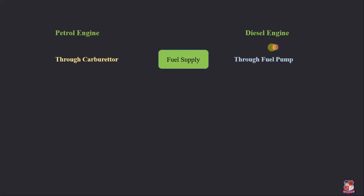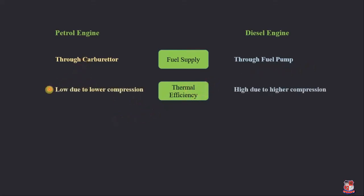Regarding fuel supply: in a petrol engine, we supply fuel through a carburetor to create a proper mixture of air and fuel in the suction stroke. In a diesel engine, diesel fuel is injected inside the cylinder near the end of the compression stroke. To inject fuel under high cylinder pressure, the pressure of diesel must first be increased, so we use a fuel pump. Regarding thermal efficiency: thermal efficiency of a petrol engine is lower due to lower compression ratio, while thermal efficiency of a diesel engine is higher due to higher compression ratio.